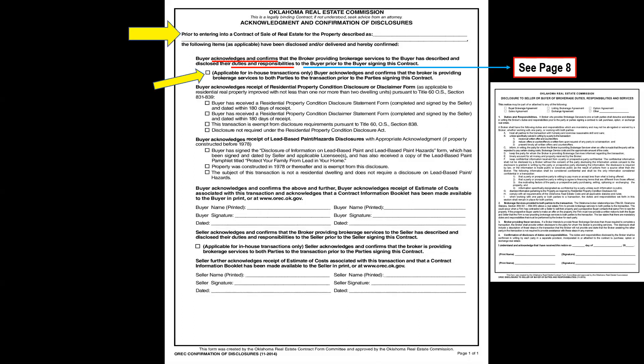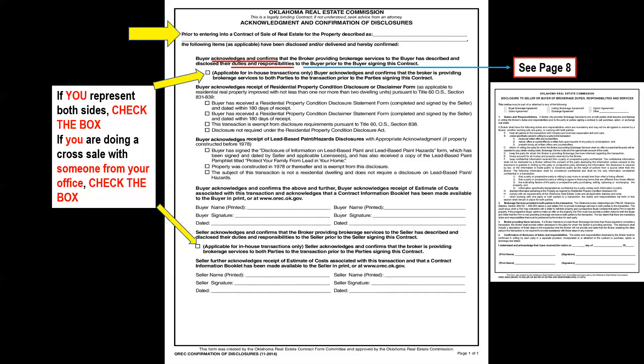There are two boxes on this document that apply to in-house transactions only, where the broker is providing brokerage services to both parties. If you are the listing agent and also represent the buyer, check that box. If you represent the buyer but someone from your same office represents the seller — not the same franchise, but the same office — also check that box.